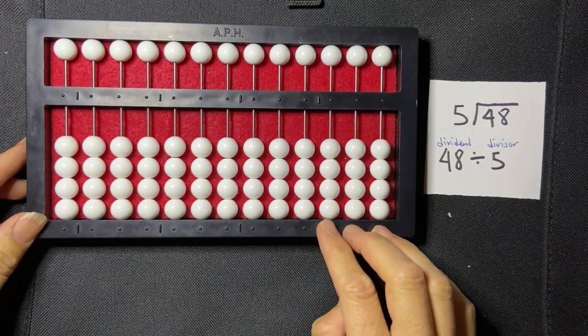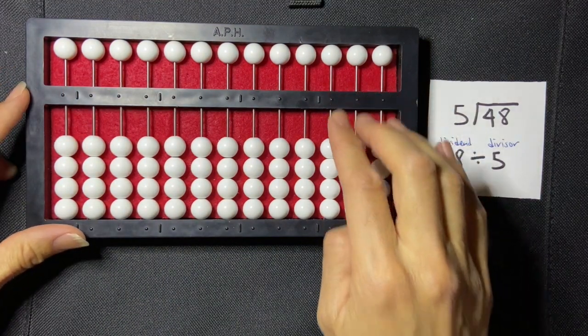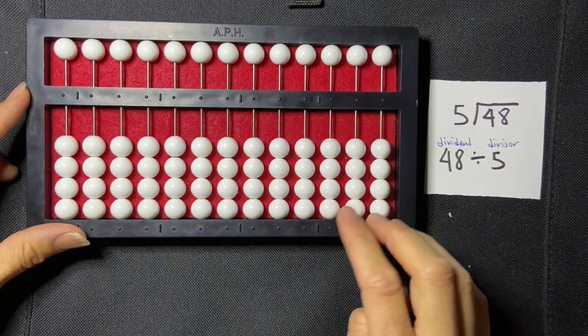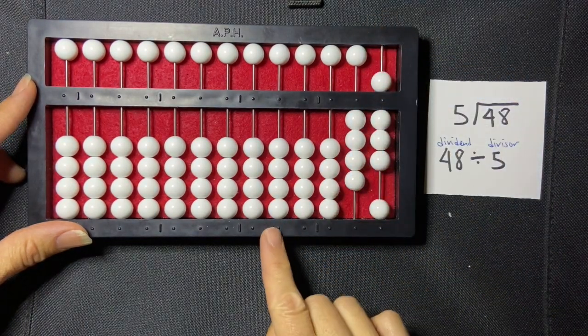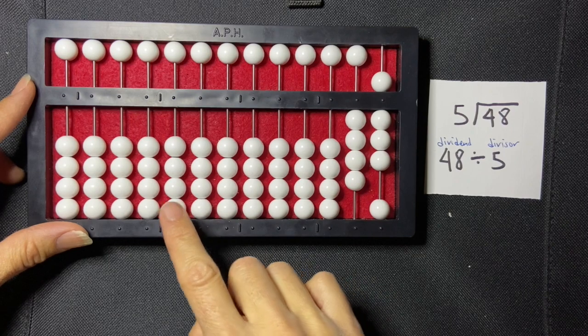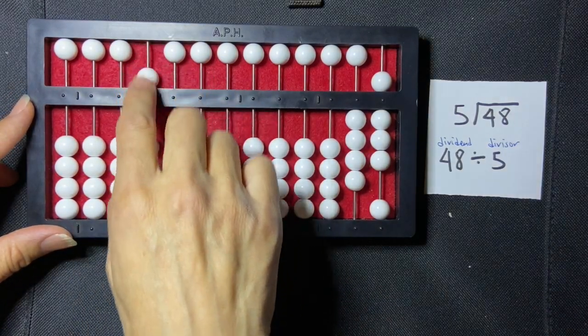So I'm going to write my divisor in the - oh, let's start with my dividend, actually. I'm going to write my dividend in the far right-hand side of the abacus, so 48, and I'm going to write my divisor in the billions period here. So we only have something in the units, and that's a 5.